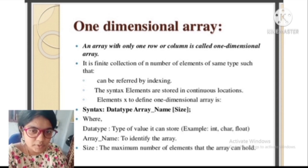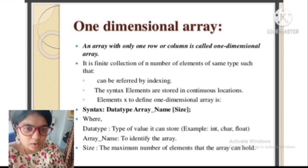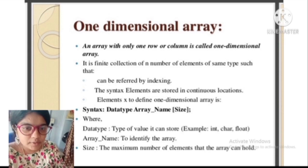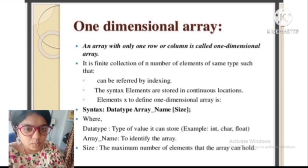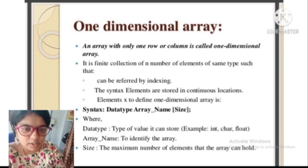A one-dimensional array is an array with only one row or column. It is a finite collection of n number of elements of the same data type. The syntax is: data type, array name, and size. Data type can be int, char, float, etc. Array name identifies the array, and size is the maximum number of elements the array can hold. For example: int student[24] — int is the data type, student is the array name, and 24 is the size.